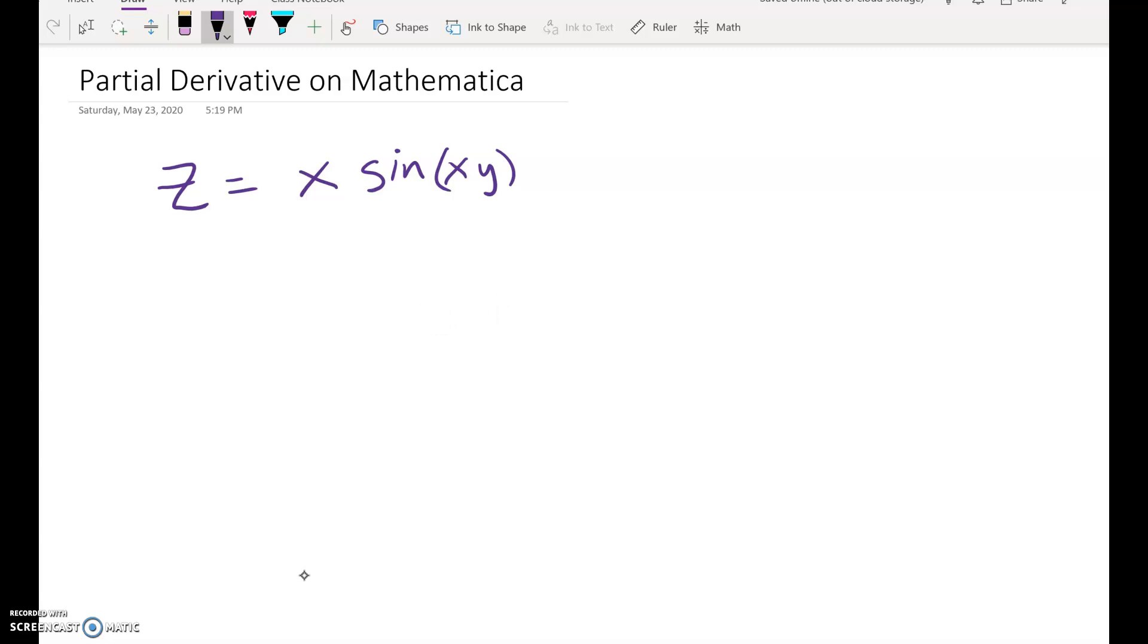I have z equals x times sine xy. The partial derivative with respect to x - we have product rule, so the first times derivative of the second, which is cosine xy. Then chain rule, derivative of xy. Since y is the constant, the derivative of a constant times x is the constant, so times y.